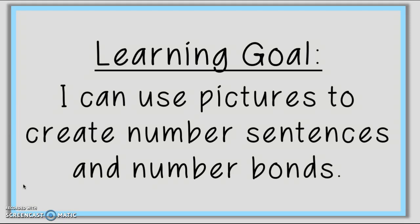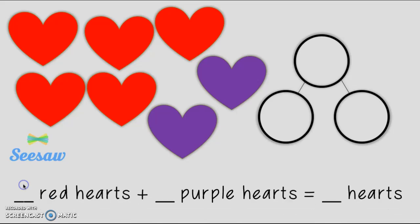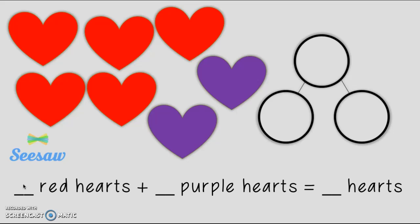Oh just kidding our learning goal for today says I can use pictures to create number sentences and number bonds and that's exactly what we've been doing. Friend we did have one more because this is your turn. Do you see all those beautiful hearts? Good. What I'm gonna have you do and for this one you do need to write out the words. It says blank red hearts plus blank purple hearts equals blank hearts. I want you to write that whole sentence. Tell me how many red hearts, how many purple hearts, and then how many hearts all together. Then I want you to use those numbers and put them in your number bond. When you're all done go ahead and send me a seesaw. Good luck friend!